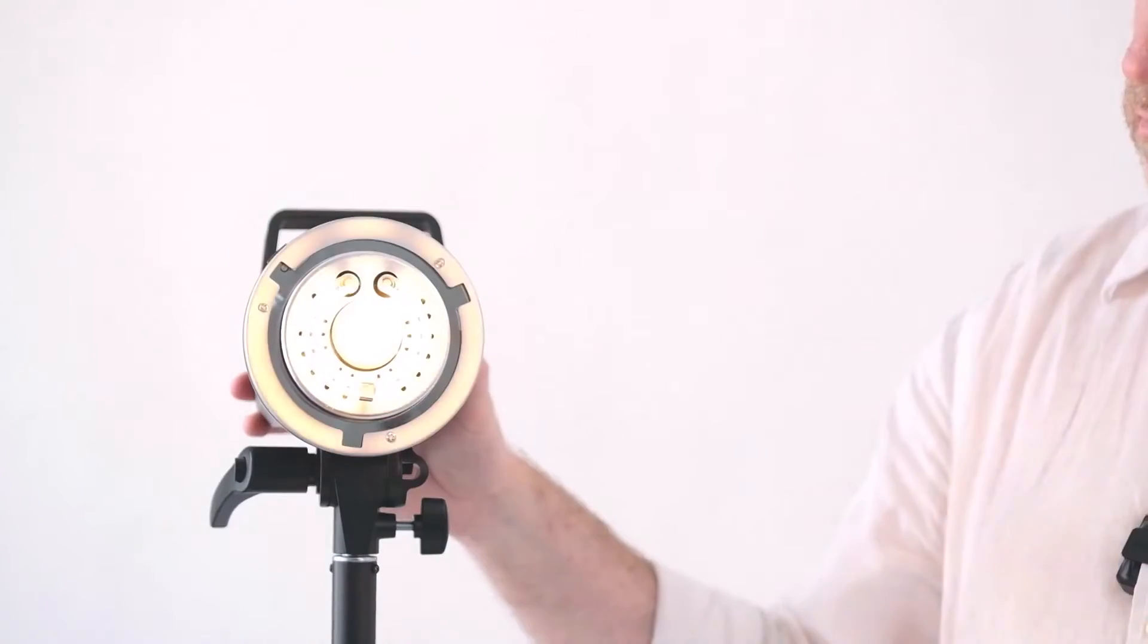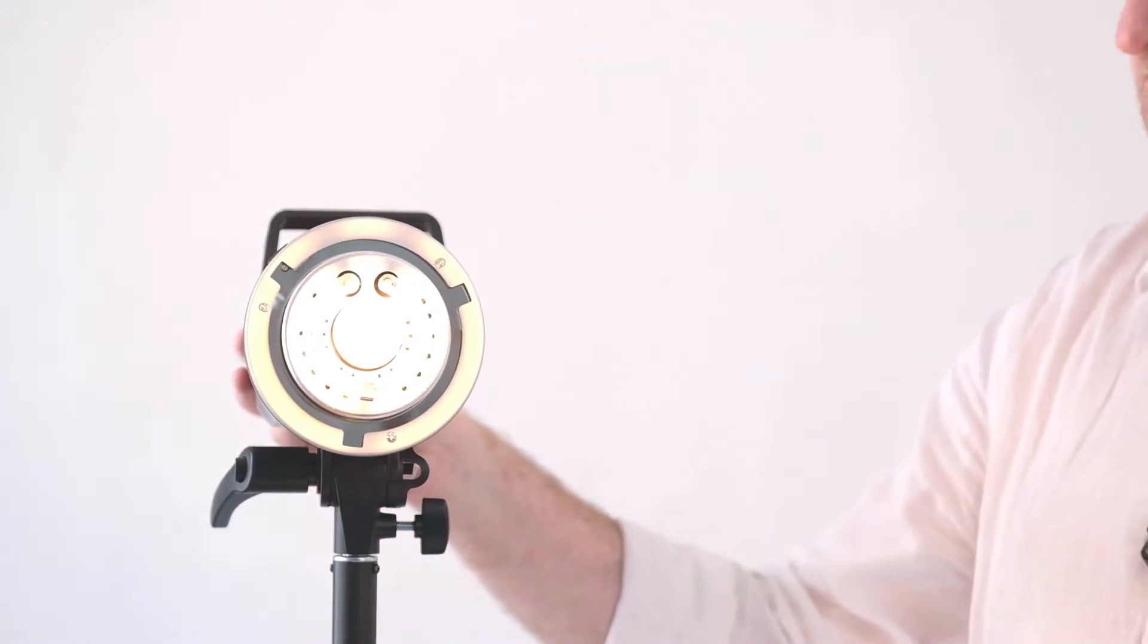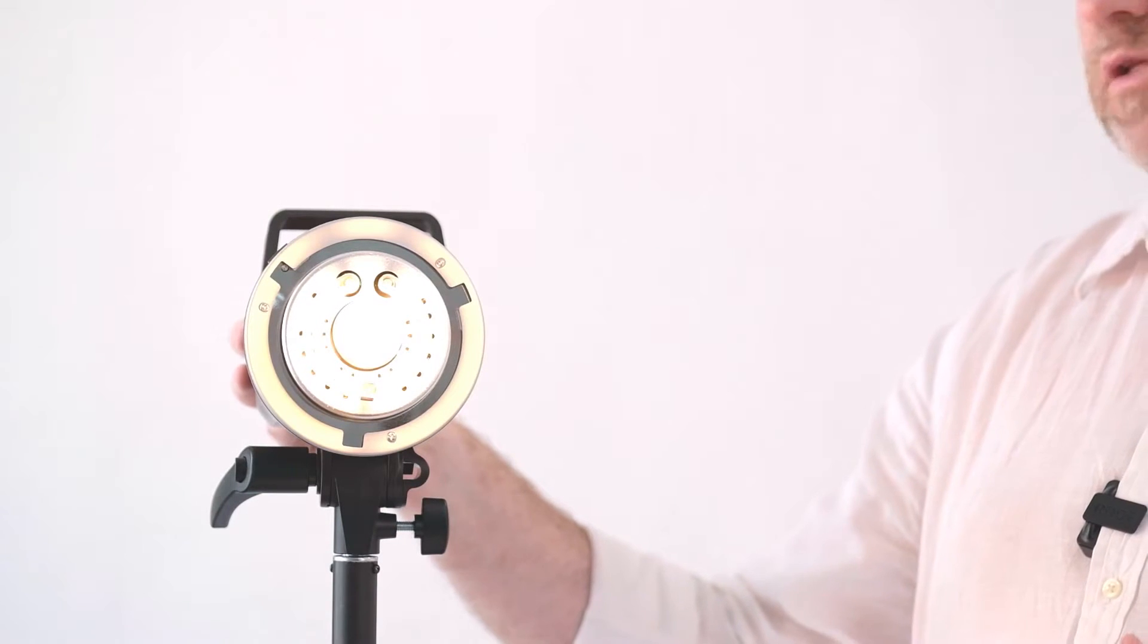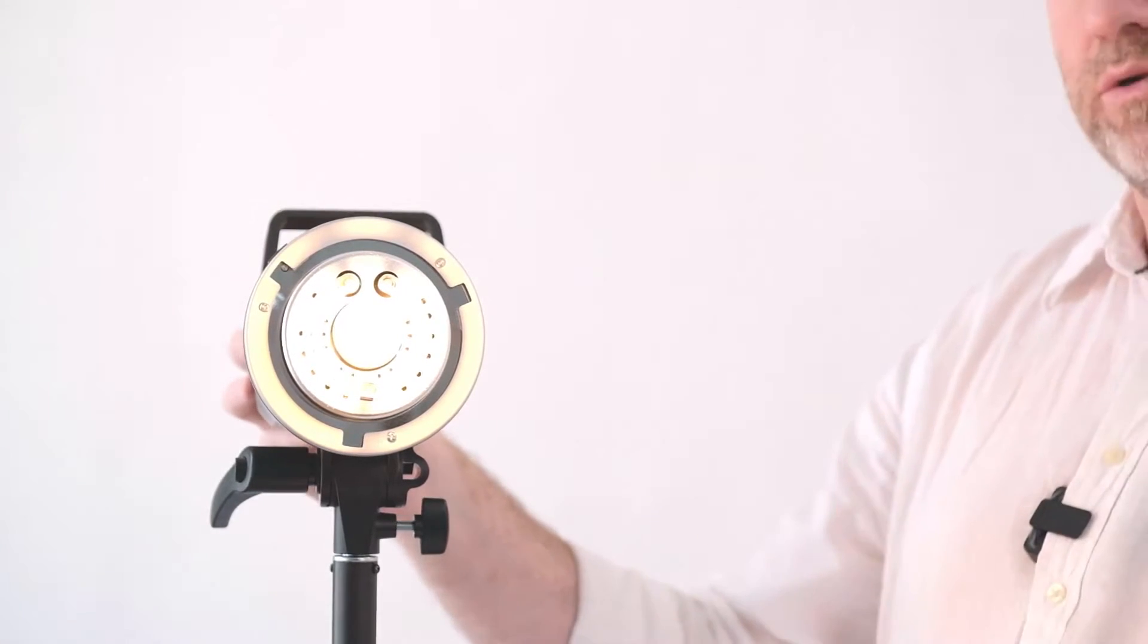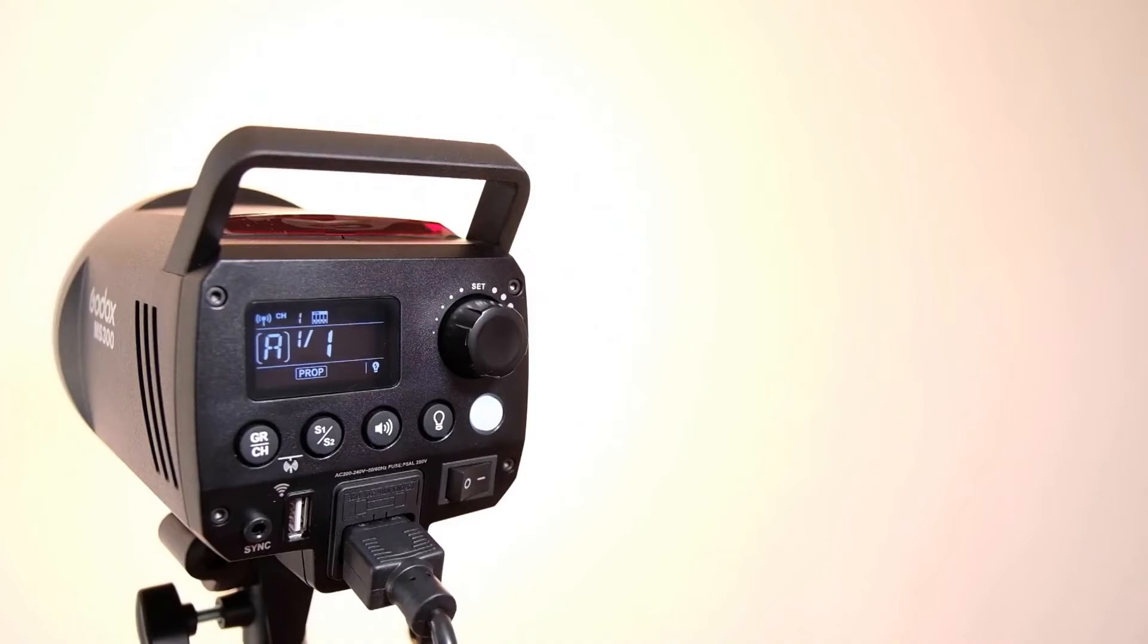Right now before we start firing the flash we can actually turn on the modelling light. It's on what's known as a proportional setting. That means that depending on the power of the flash it will brighten or darken. If I hit another button it's currently at a hundred percent. So that's as bright as the modelling light will go. Then of course you can have the modelling light turned off.